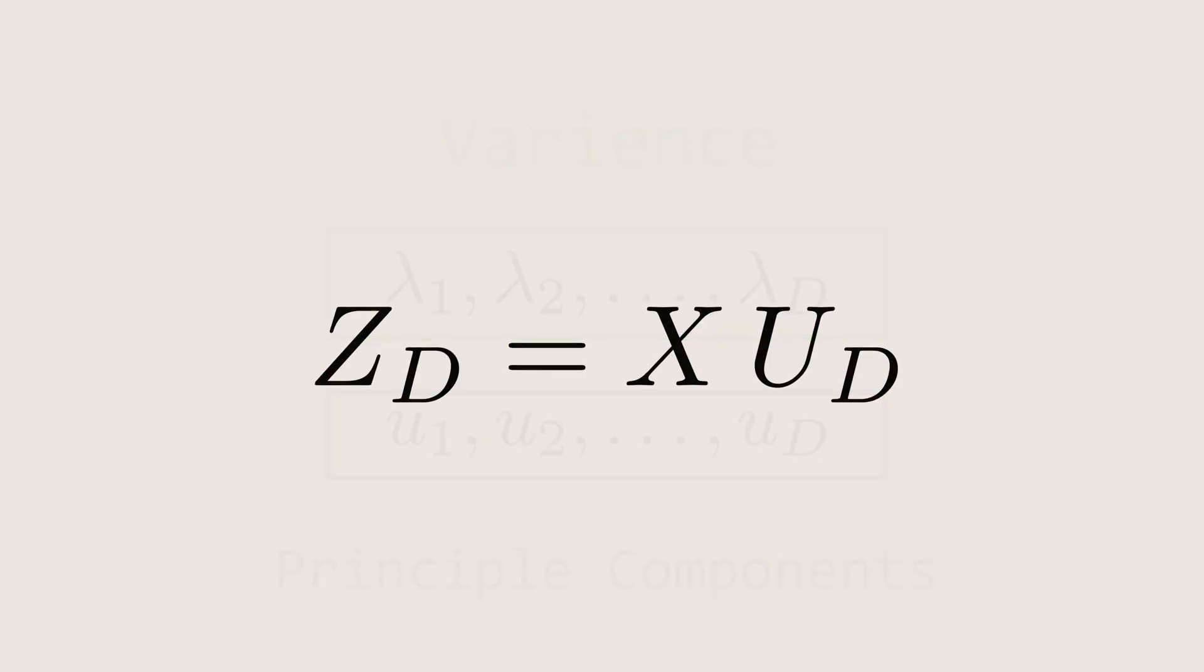Now, we can obtain our new projected dataset by transforming the original dataset into the u-directions, essentially projecting the data along the principal component factors. But since our goal is dimensionality reduction, we don't need all the principal components.